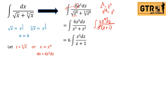Next, we divide z cubed by (z plus one) using long division. z cubed divided by z gives z squared. Multiply z squared by (z plus one) to get z cubed plus z squared; subtracting leaves negative z squared. Dividing negative z squared by z gives negative z. Multiply negative z by (z plus one) to get negative z squared minus z; subtracting leaves positive z.